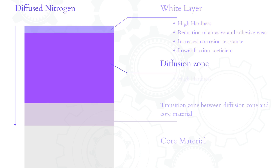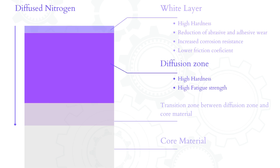The diffusion zone follows beneath. Depending on the steel grade and the process parameters, this zone can range between 10 and 800 microns or more in depth. Nitrogen is inside the crystal structure, making strong bonds with iron and some of the alloying elements. This zone adds support to the surface for sustaining higher application loads and has high hardness and high fatigue strength.